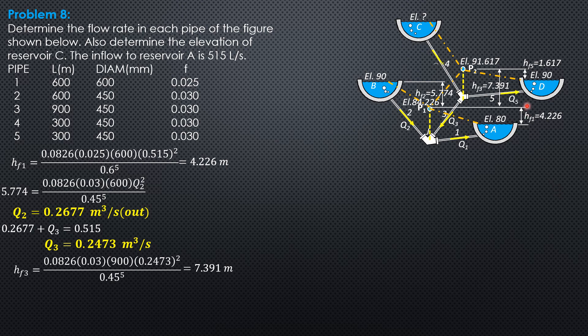Let's compute Q5. And this is Q4, the direction. 1.617 equals 0.0826, 0.03, length 300, Q5 squared over diameter 0.45 raised to 5. So Q5 is 0.2003 cubic meter per second, and that is inflow to reservoir body.